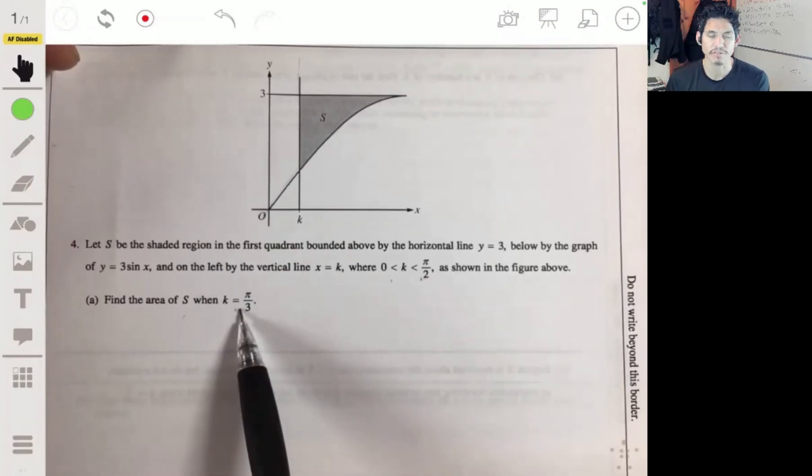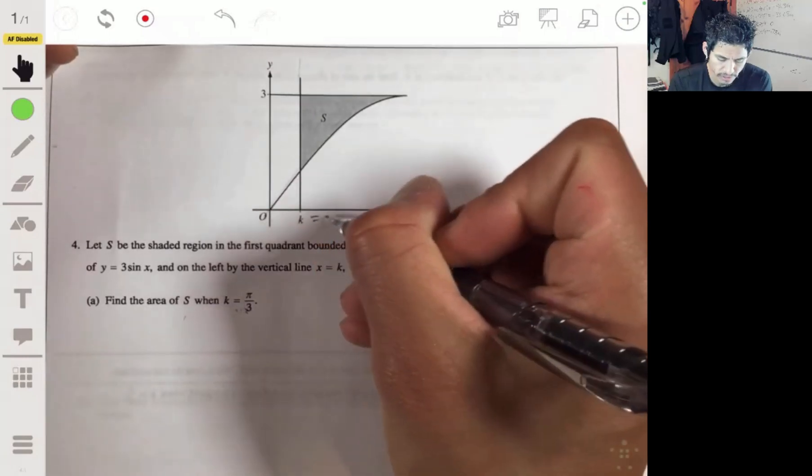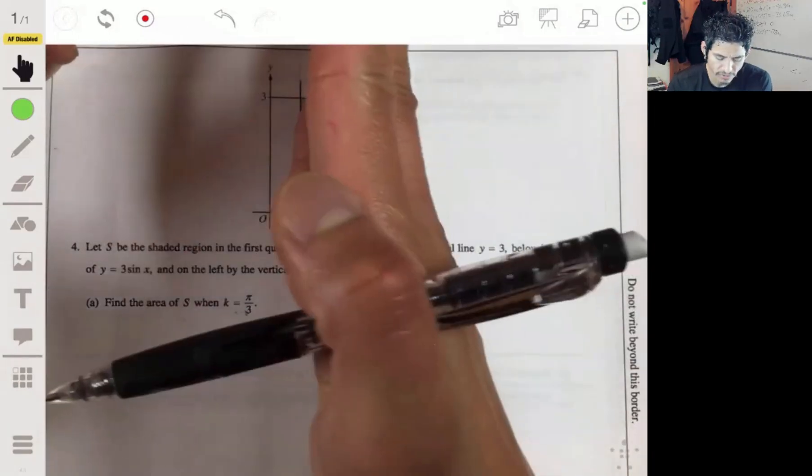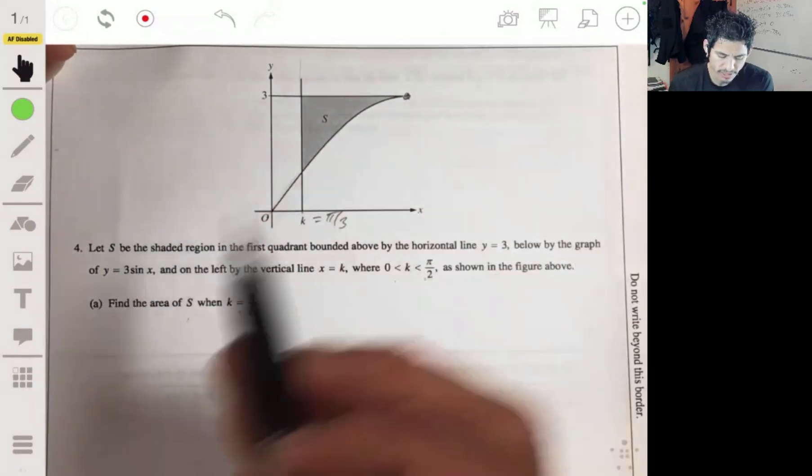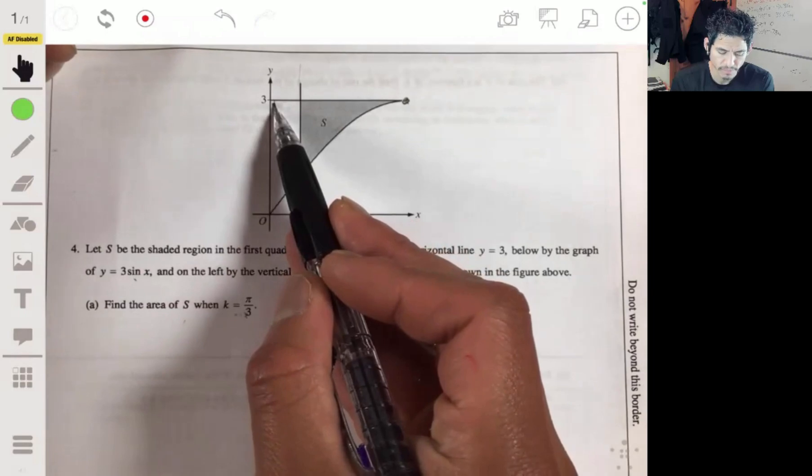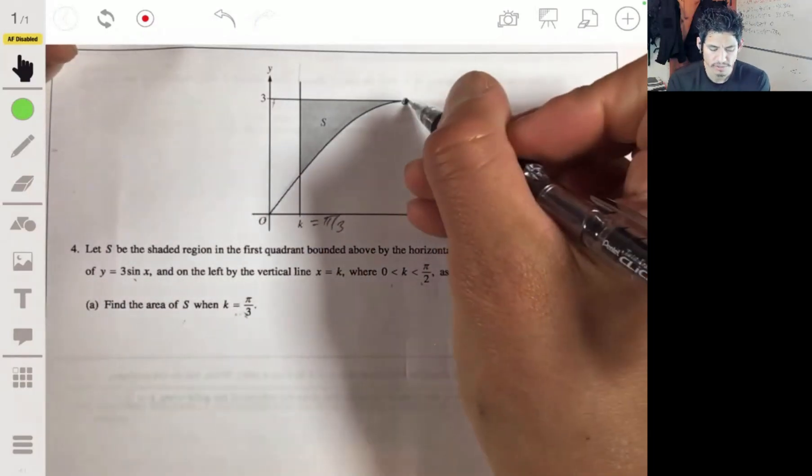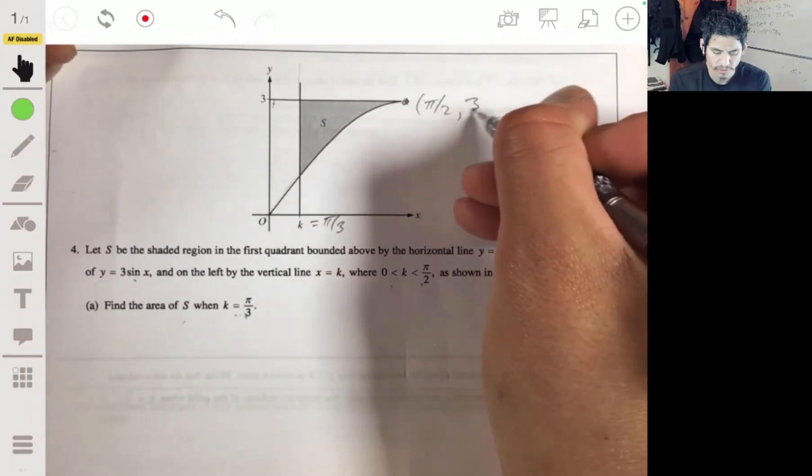Find the area of S when k equals pi over 3. Okay, so if k equals pi over 3, we're going to integrate from pi over 3 to when 3 times the sine of x equals 3, so that means sine of x is 1, so then that's going to be pi over 2. So this is pi over 2 comma 3.